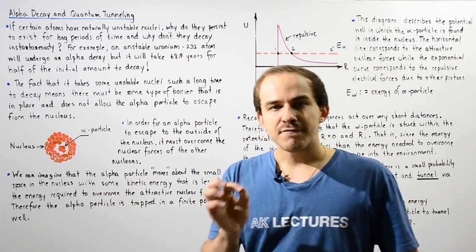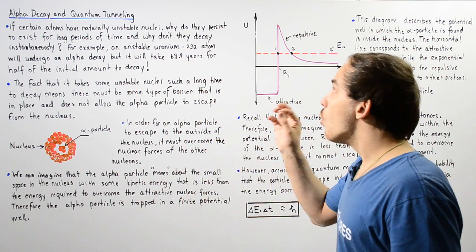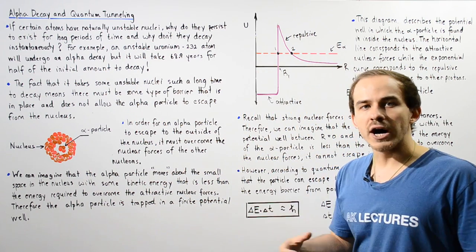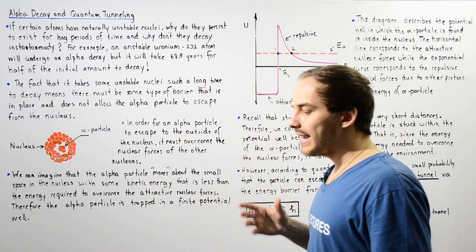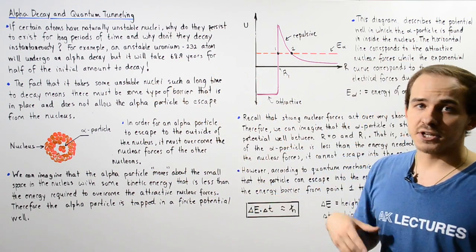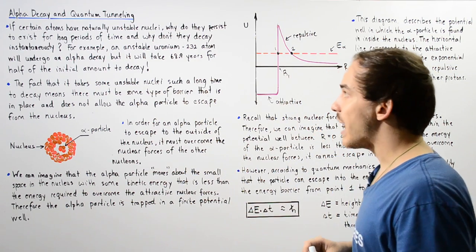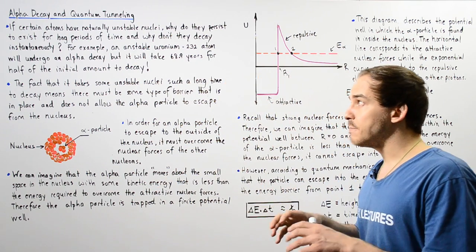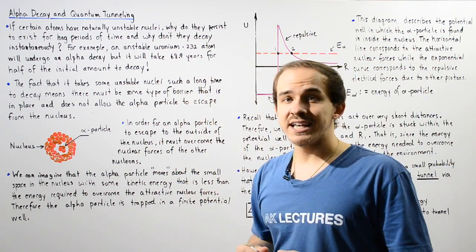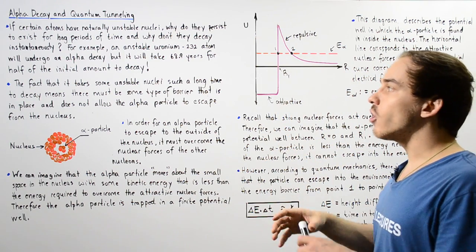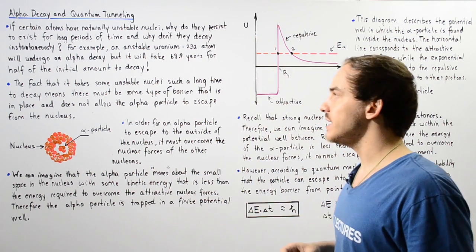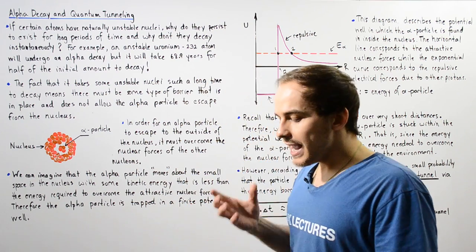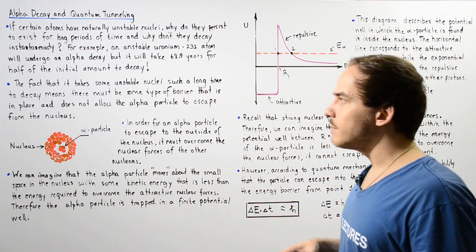Now, if certain atoms have naturally unstable nuclei, why do they persist in nature for long periods of time, and why don't they simply decay instantaneously? For example, if we examine the unstable uranium-232 atom, we'll see that it does undergo alpha decay, but it will take about 68.9 years for half of the initial amount of uranium to actually decay. The question is: why does it take so long if the nucleus is so unstable?